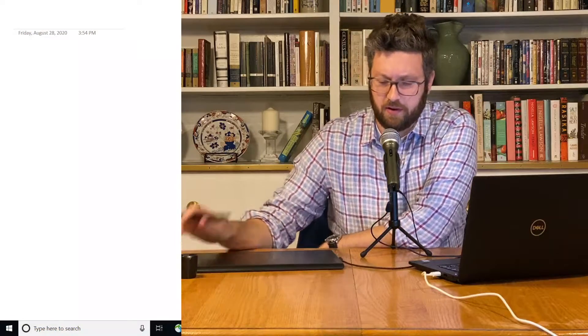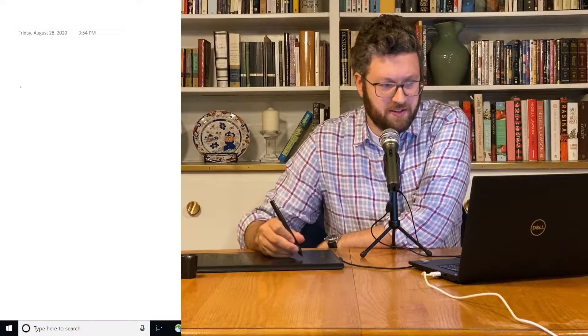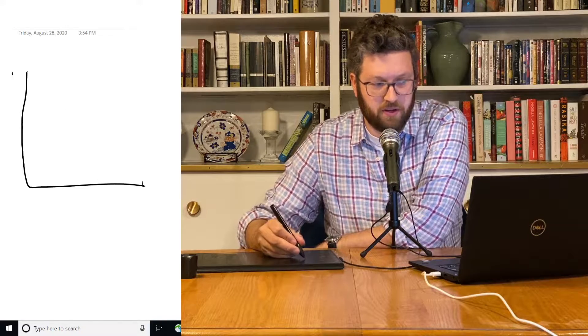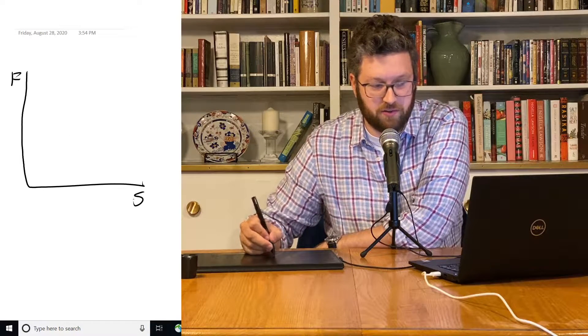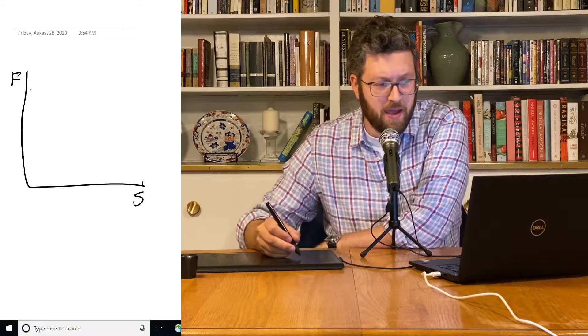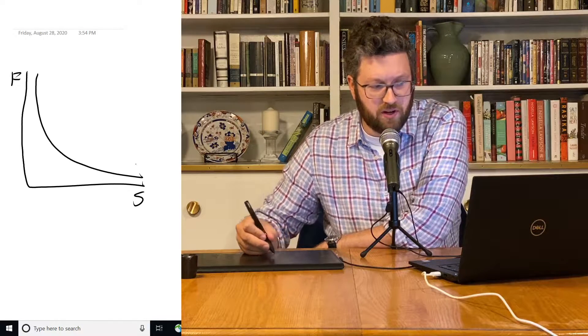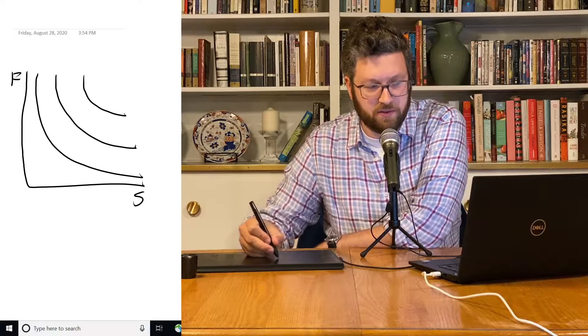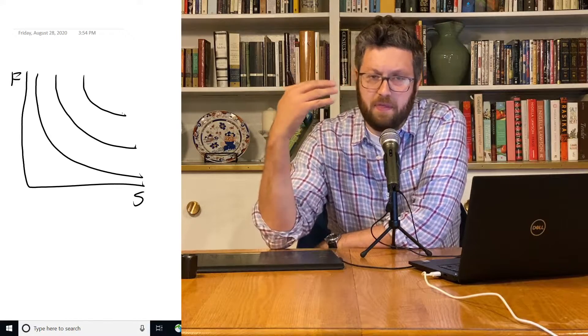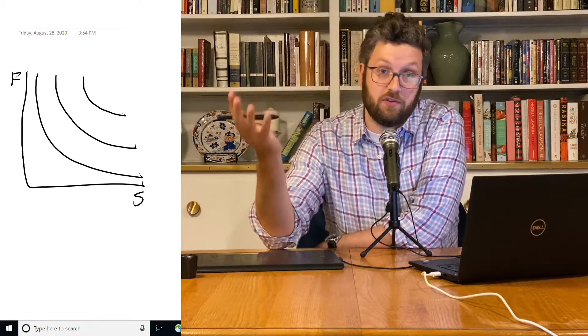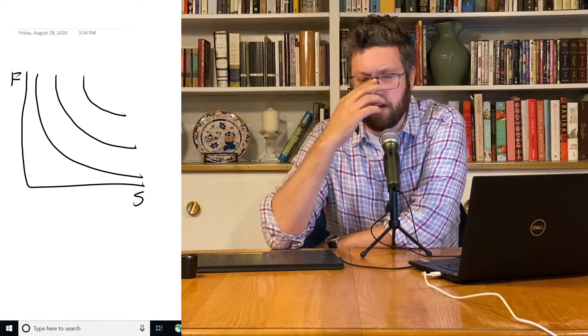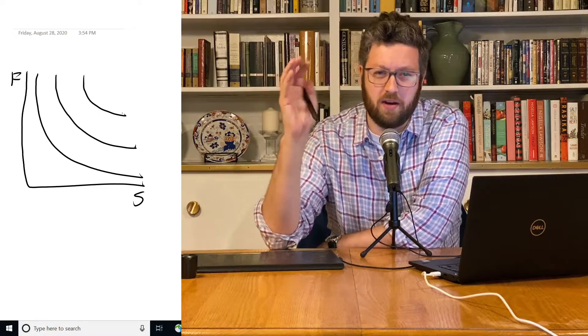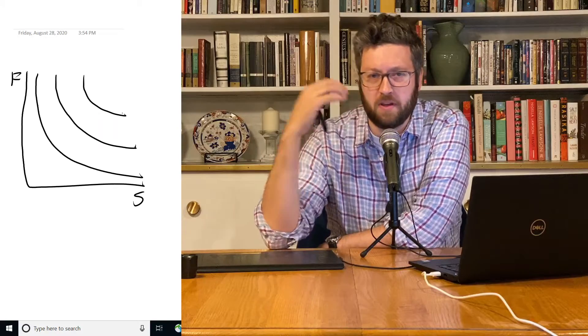We've already covered the basics of how consumers have preferences over things. We can imagine food and shelter as two things they care about. And we've constructed a utility function and indifference curves to map their preferences over different trade-offs where they get more food and less shelter or vice versa. We can do this over anything, any bundle of goods, as many as we want, not just two things.